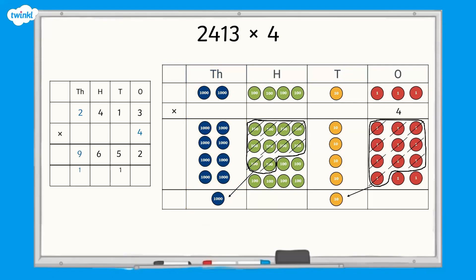We can now clearly see that two thousand, four hundred and thirteen multiplied by four equals nine thousand, six hundred and fifty-two. This is called the product.